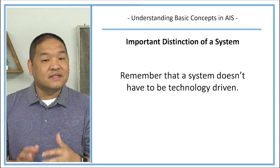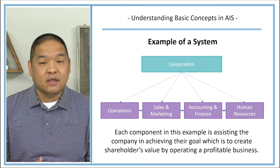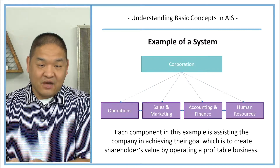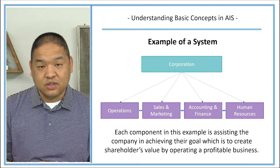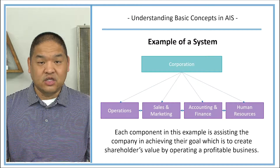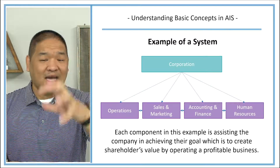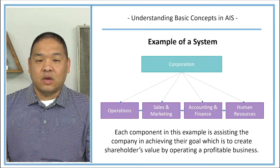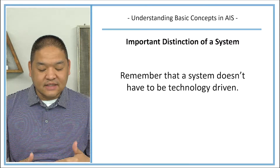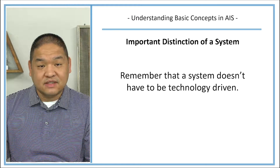Remember that a system doesn't necessarily mean technology. All of these departments are probably connected by technology, but even without it, someone in accounting might walk over and talk to someone in human resources or sales and marketing. That may not require any technology at all — you might just walk to their office and discuss a task or activity both departments are working on. A system doesn't have to be technology-driven.